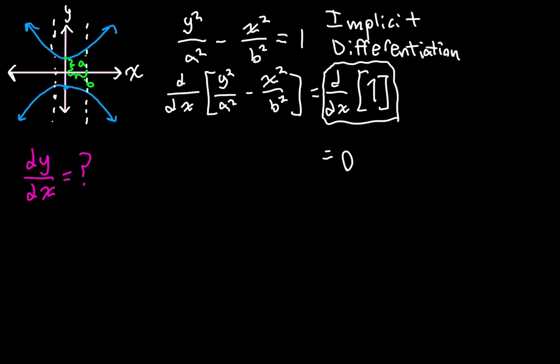And then I'm going to split the left part up into two separate derivatives. And I'm going to pull out the a² and b² in the denominators as coefficients. So we're going to have 1 over a² times the derivative with respect to x of y² minus 1 over b² derivative with respect to x of x². All right. So all we have to do now is actually take the derivatives and simplify.